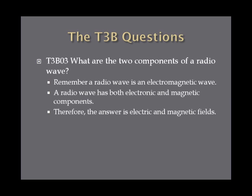What are the two components of a radio wave? If you remember from a previous lesson, a radio wave is an electromagnetic wave. It has both electrical and magnetic components, so the best answer is electric and magnetic fields.